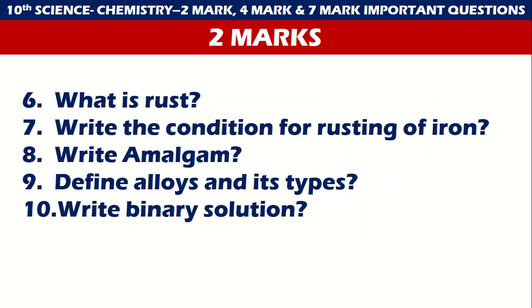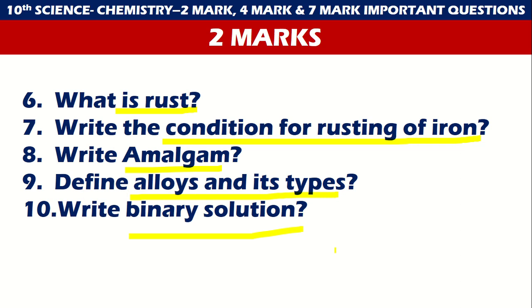The next five two-mark chemistry questions are: what is rust, write the conditions for rusting of iron, write amalgam, define alloys and its types, and write binary solution. These are the five questions for chemistry two marks.